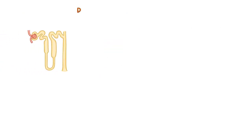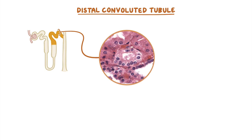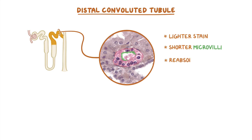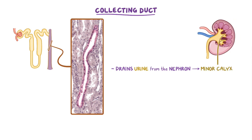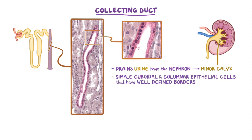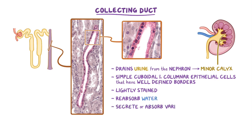Similar to the proximal convoluted tubule, the distal convoluted tubule typically can only be seen as cross-sections because of the convoluted path through the cortex. The main differentiating features of the distal convoluted tubule include its lighter stain and shorter microvilli when compared to the proximal convoluted tubule. This portion of the nephron will reabsorb sodium and chloride, which makes the urine hypotonic. The collecting duct is the final portion of the nephron that drains urine into a minor calyx at the apex of a renal pyramid. Its walls consist of simple cuboidal and columnar epithelial cells with well-defined borders that are also lightly stained. The collecting duct actively helps regulate the body's electrolyte and fluid balance by reabsorbing water from the filtrate as needed and secreting or absorbing various electrolytes.